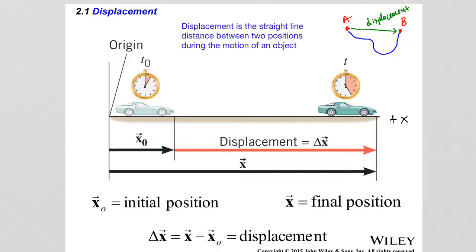Since this chapter deals with one-dimensional motion, most of the time we will have objects moving along a straight line, so displacement and distance traveled will be the same. However, there will be some problems where that is not the case.